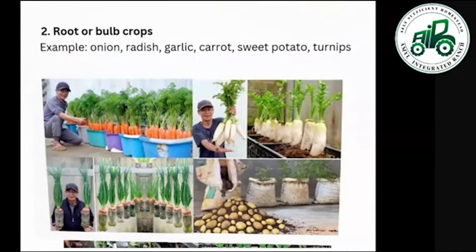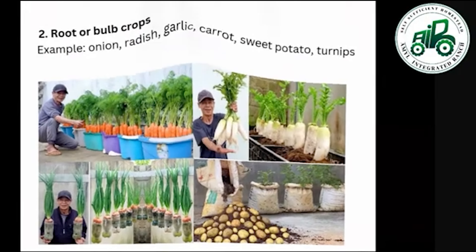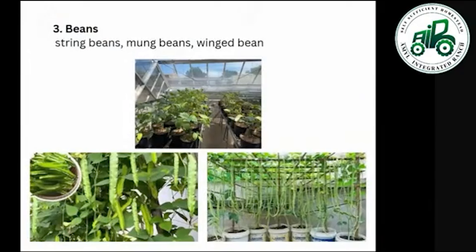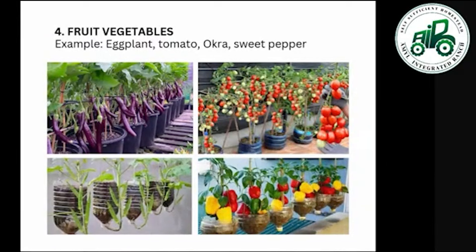Root or bulb crops include onion, radish, garlic, carrot, sweet potato, and kamote. Beans include string beans, mung beans, and winged bean — note that string beans and winged bean require a trellis, especially for vine plants. Fruit vegetables include eggplant, tomato, okra, sweet pepper, and bell pepper.